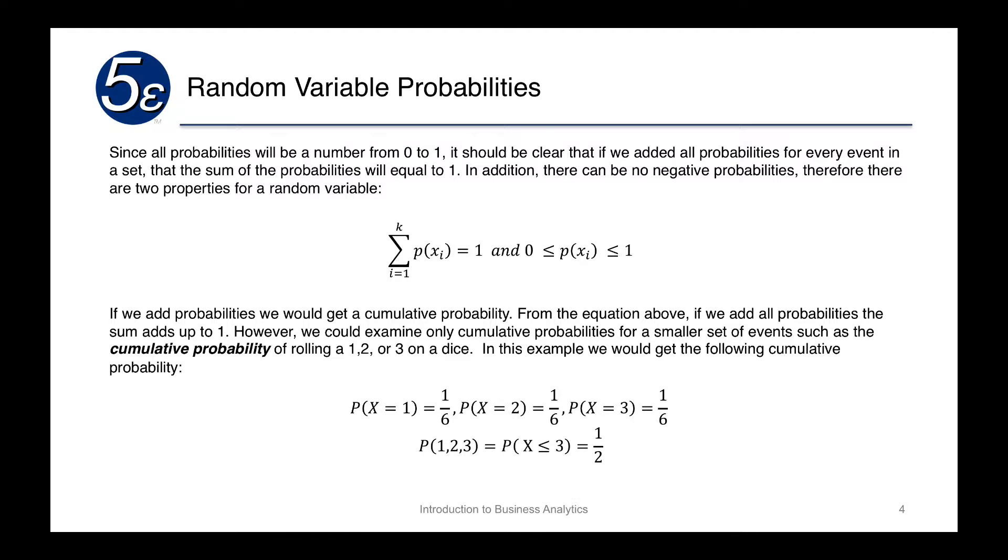Since all probabilities are a number from 0 to 1, it should be pretty clear that if we add all the probabilities for every event in a set, the sum of the probabilities will equal 1. In addition, there can be no negative probabilities. Negative probability wouldn't make any sense. Therefore, there are two properties for a random variable: adding up all of the individual probabilities for every single event will equal 1, and all of the probabilities will lie between 0 and 1 inclusive.